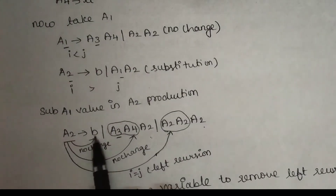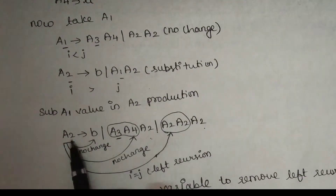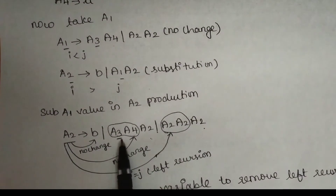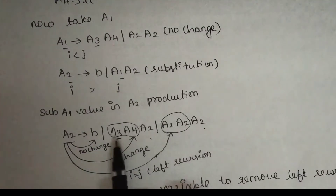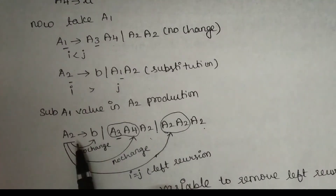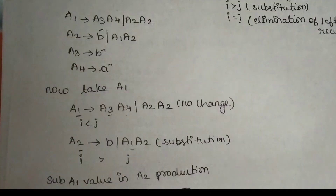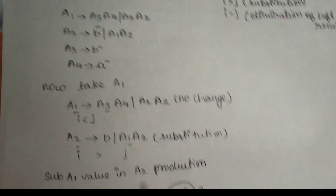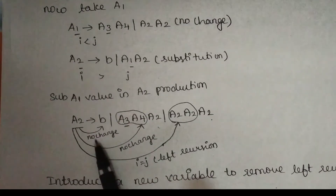A2 goes to B is here. If we check A2, i value is 2 and j value is the same — i less than j, so no change. There is no change here.